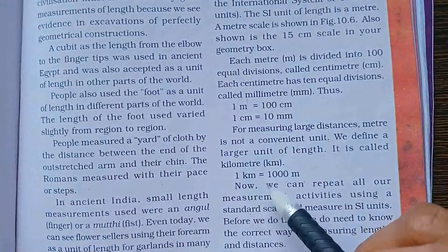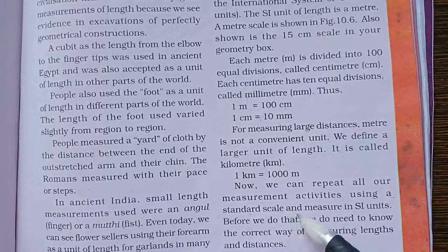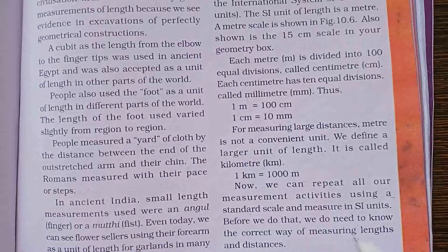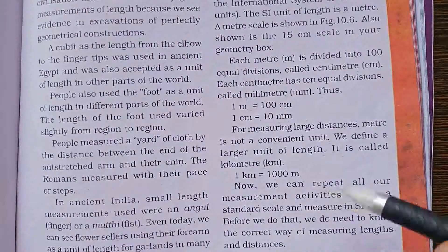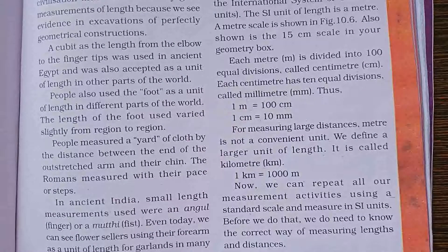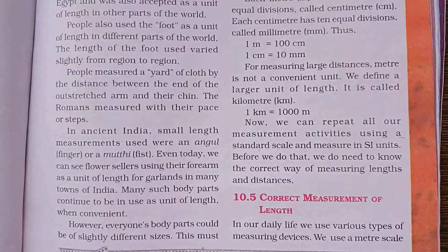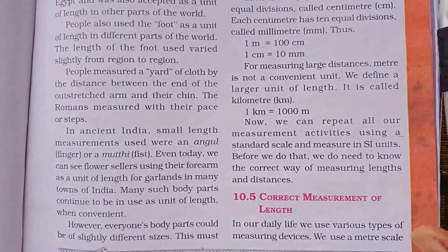So 1 km is equal to 1000 meters. Now we can repeat all our measurement activities using a standard scale and measure in SI units. जैसे हमने table का length handspan से और class का length footstep से check किया था — अब fit और handspan का use नहीं करके हम SI unit का use करेंगे. But हमें correct measurement of length के बारे में पता नहीं है, so उसके बारे में हम next lecture में discuss करेंगे. I hope you understand today's lecture on standard unit of measurement. In the next lecture, we will discuss the correct measurement of length. Thank you. Stay home, stay safe.